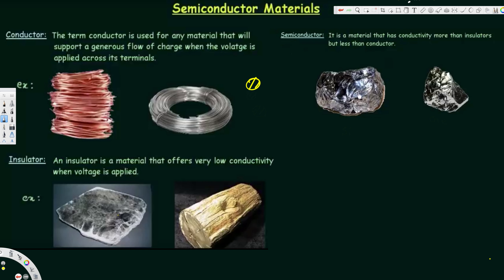On the other hand, we have the insulator. The conductivity is very low for this one, and when voltage is applied across the terminals we are going to have very low current flow. Examples include mica and wood. Mica is very important in electrical industries because it is used for thermal and electrical insulation. The conductivity is really low for the insulator, and the flow of charge is nearly equal to zero.